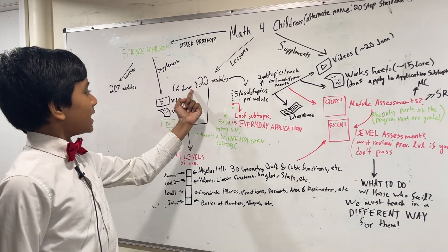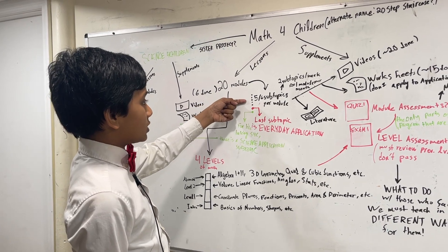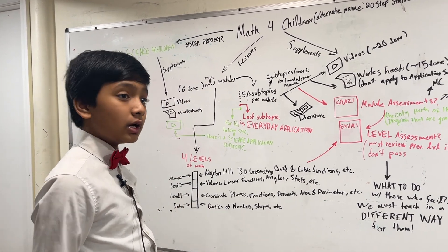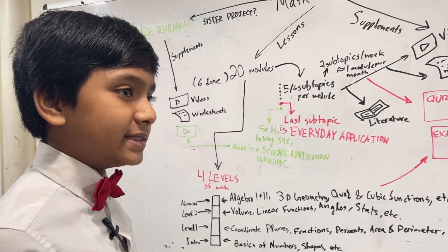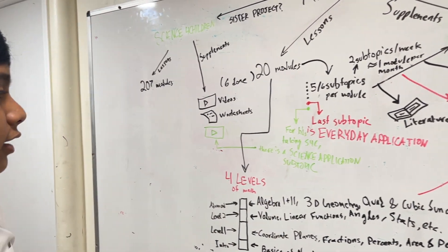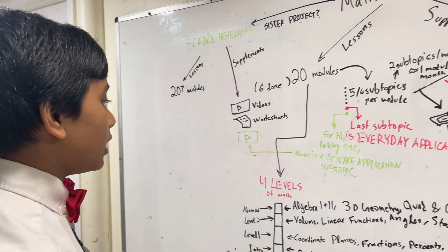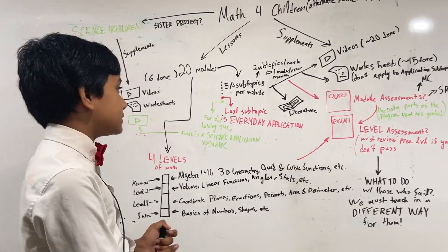The lessons are going to be split into 20 modules, of which six are done, and there will be five to over six subtopics per module. The last subtopic will always be an everyday application or business application, and kids taking Science for Children, obviously this is a hypothetical in the future, there is a subtopic about its application in science.